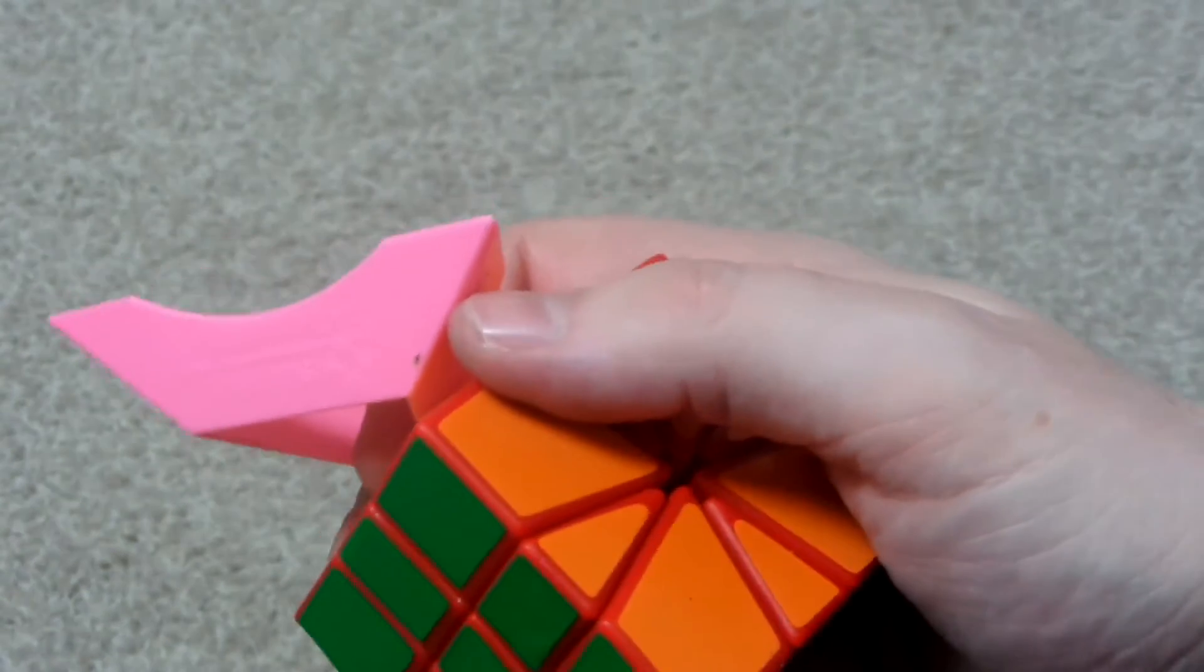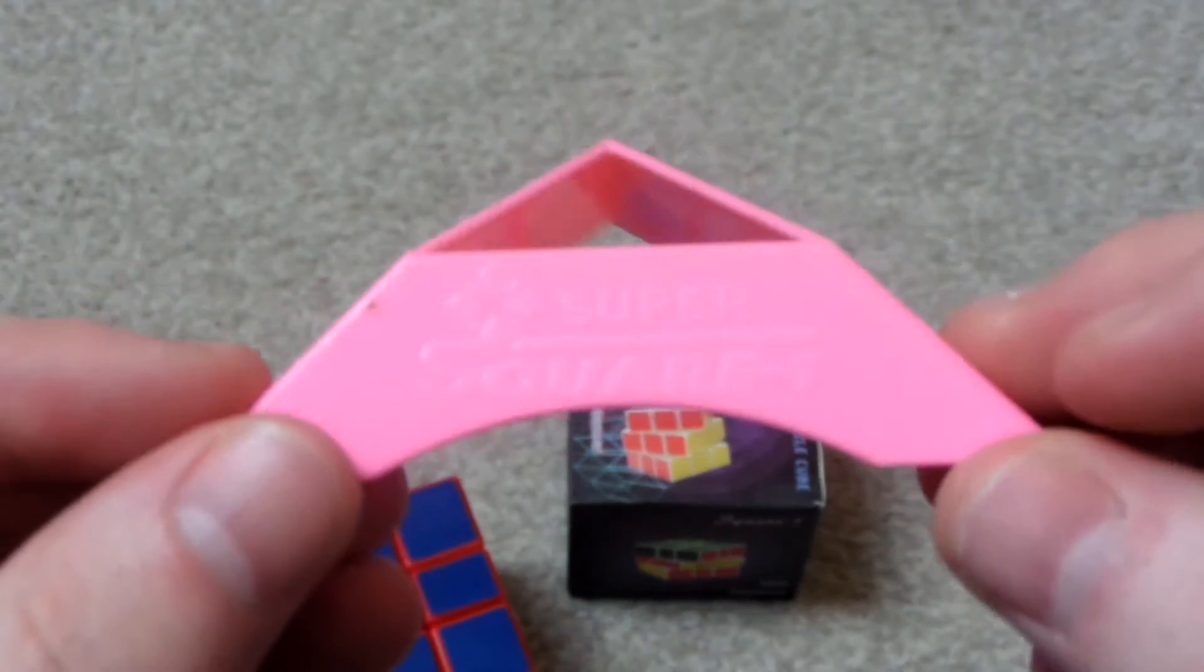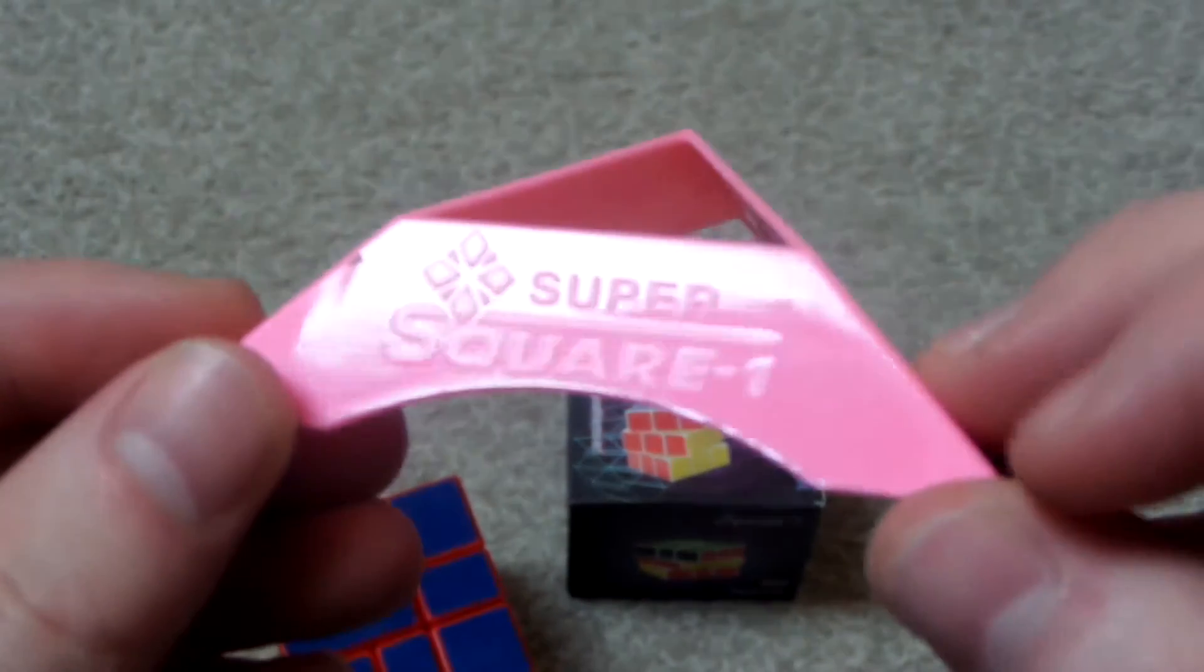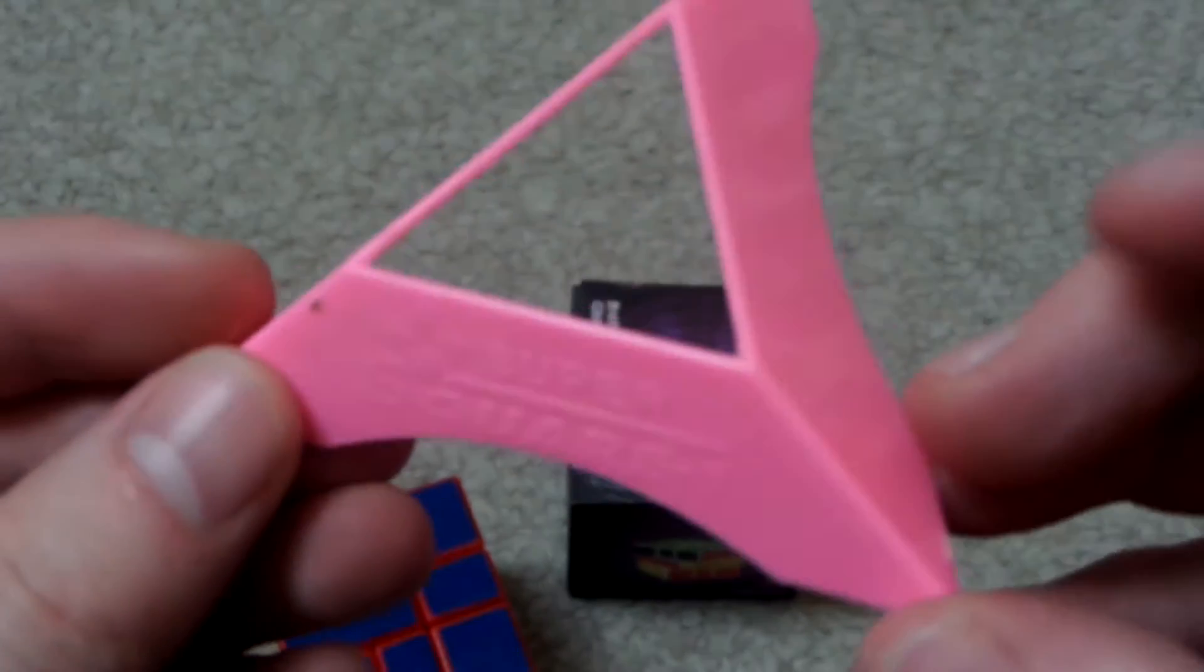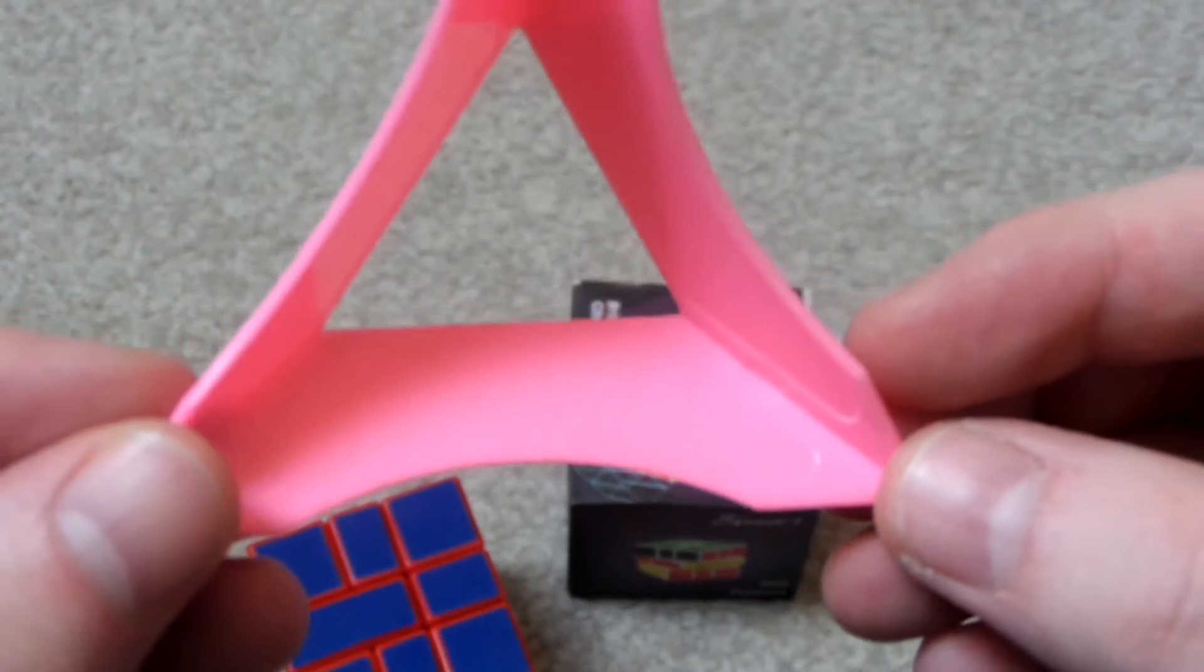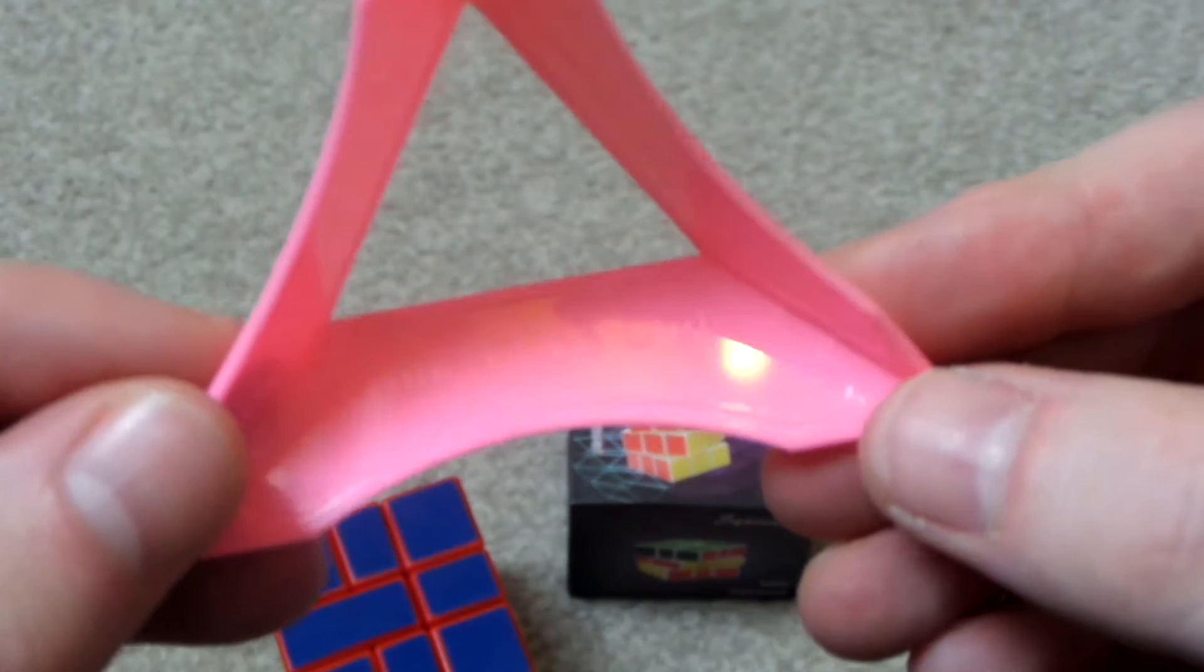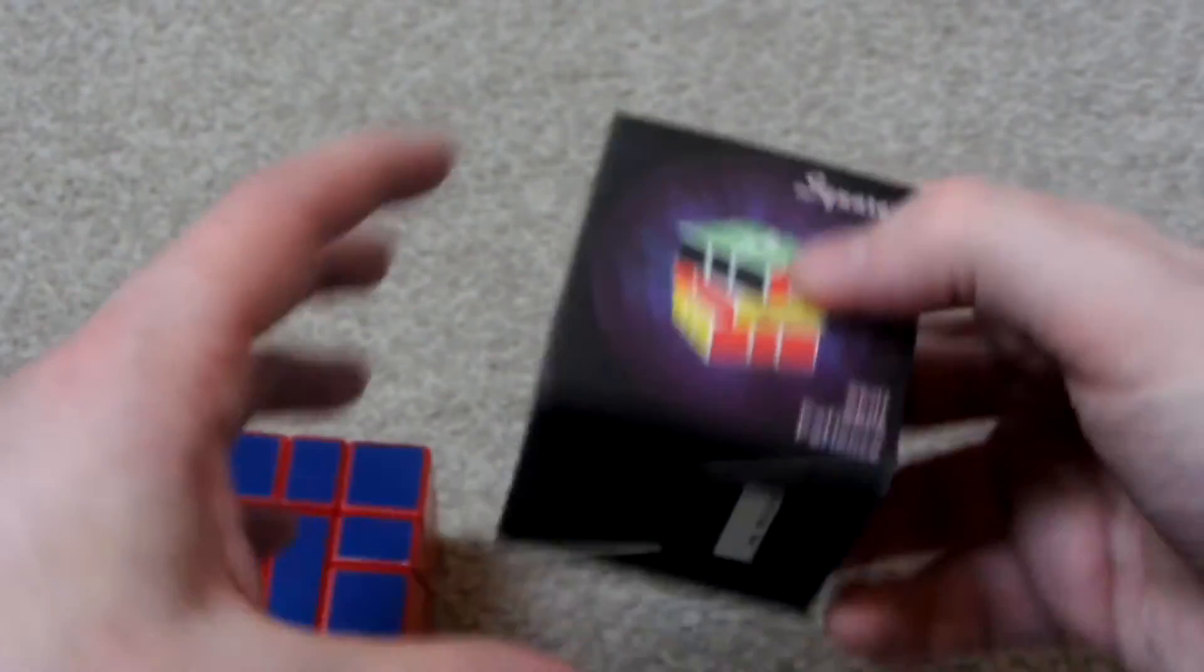And again we get the pink stand. This one's different from the other one that I got. The other one said Cube Club on it. This says Super Square-1. I think it's got the same stuff on the other side of it. Yeah. And let's open up the other one.